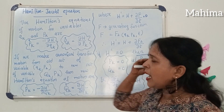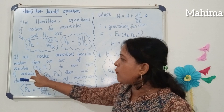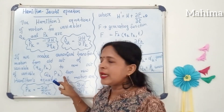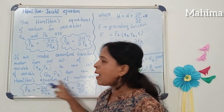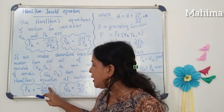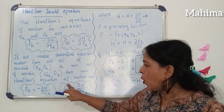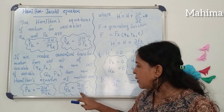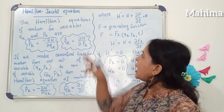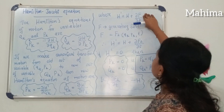If we want to make a canonical transformation from the older set of qk, pk to the new set of variables, capital Qk and capital Pk, then the new Hamiltonian equations become: capital Pk dot is equal to minus del H' divided by del Qk, and Qk dot is equal to del H' divided by del Pk. Here H' is the new Hamiltonian function and it can be written as H' is equal to H plus del F by del t.